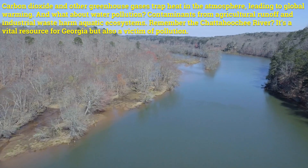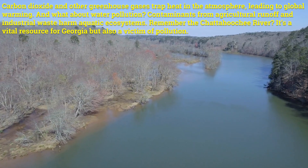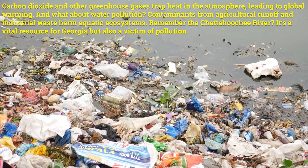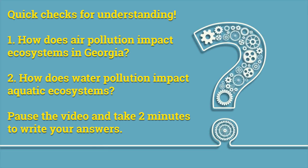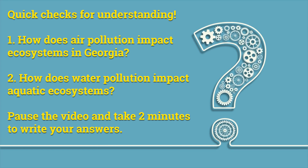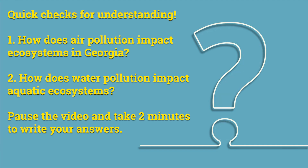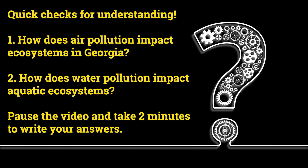Remember the Chattahoochee River? It's a vital resource for Georgia but also a victim of pollution. Quick check for understanding. Number one: How does air pollution impact ecosystems in Georgia? Number two: How does water pollution impact aquatic ecosystems? Pause the video and take two minutes to write your responses. You got this, brilliant geniuses.